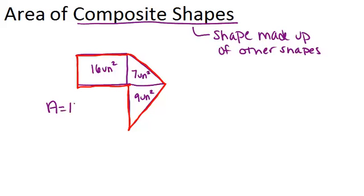So the area would be 16 plus 7 plus 9, which is 32 units squared. So the basic idea is you can figure out the area of a composite shape by breaking it down into shapes that you know, finding the area of those parts, and then finding the sum of all of the different areas.